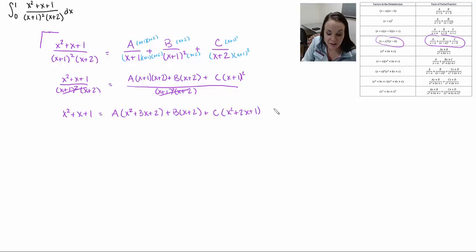Alright. So now I do a little bit more. I can go ahead and I can distribute each of these through. And when I do that I end up getting ax squared plus 3ax plus 2a plus bx plus 2b plus cx squared plus 2cx plus c.